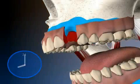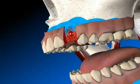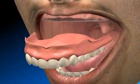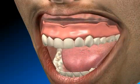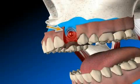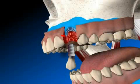Sometimes, a so-called flabby ridge forms. This is understood as an alveolar ridge consisting of connective tissue, and is usually observed when the osseous alveolar ridge regresses at a very quick rate — for example, due to an ill-fitting prosthesis. In such cases, a fibrous ridge remains, which is not usually suitable for implantation.